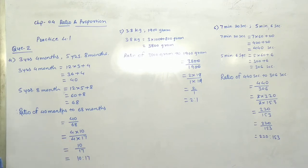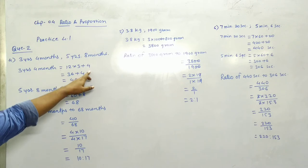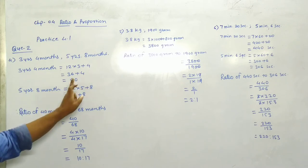That is, three years, four months equals 12 into 3 plus 4, which is 36 plus 4, answer is 40 months.